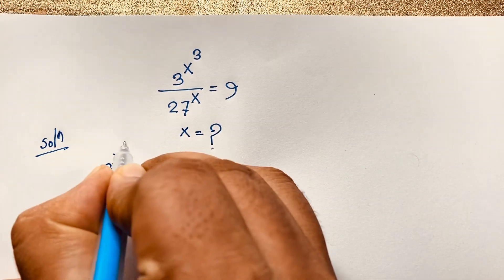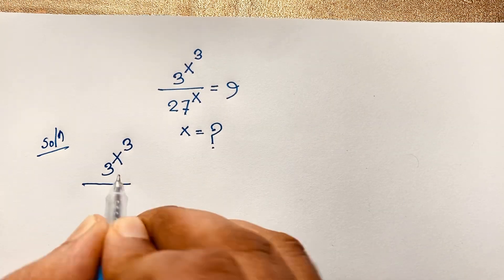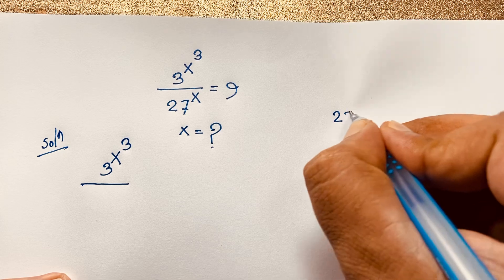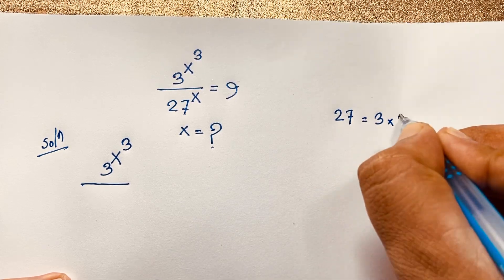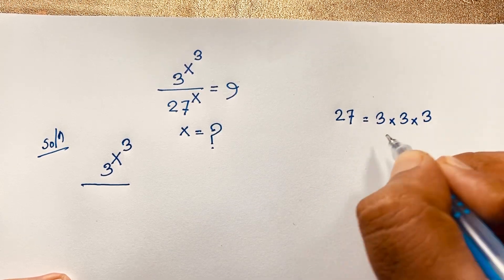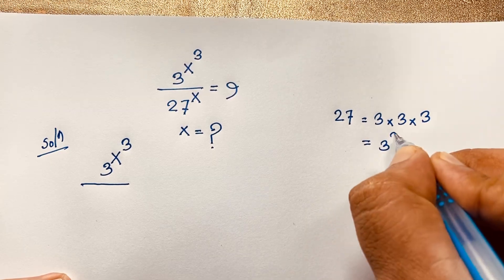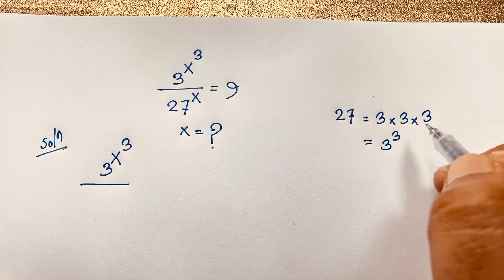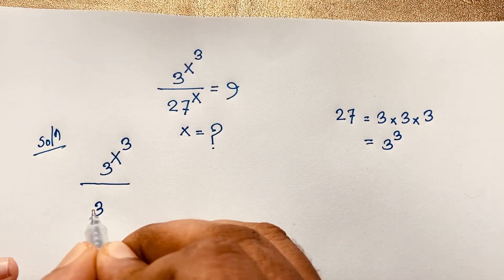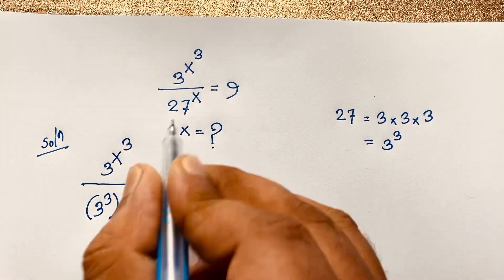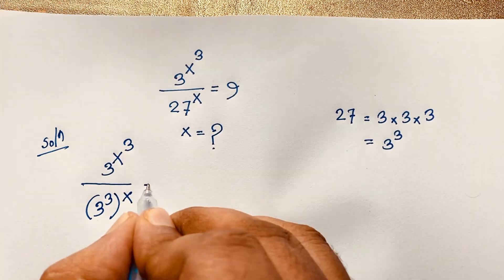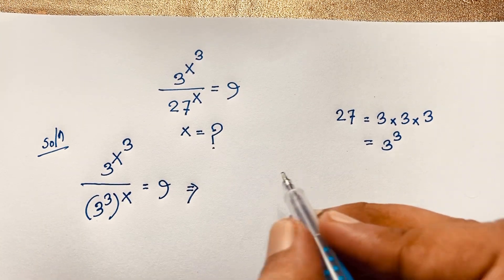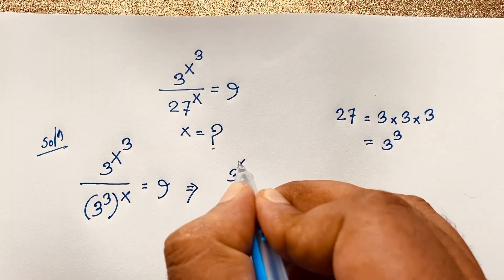We have 3 to the power x cubed over 27. If I evaluate 27, it will be 3 times 3 times 3, which is 3 to the power 3. So I can write here 3 to the power 3, and the bracket power is x, which is equal to 9. So we have 3 to the power x cubed over 3 to the power 3x.